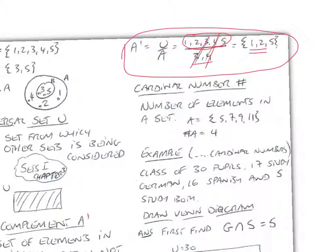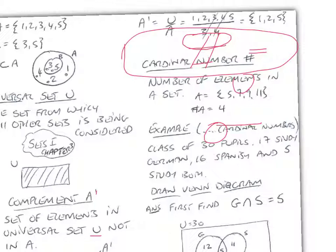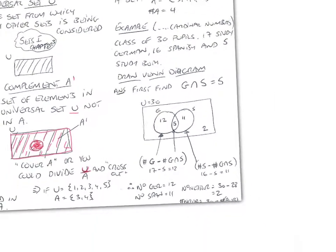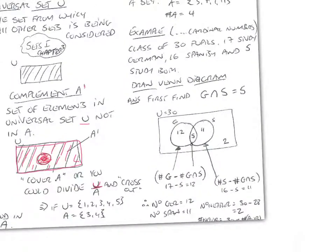Cardinal number then, this symbol here, the number of elements in the set A, so it's the number of elements in a set, basically. So if A equals this, there's 4 elements there, a cardinal number of A is 4. Now, let's look at Venn diagrams, and where we have to kind of consider the cardinal numbers. So, for example, here we have a question that says, class of 30 pupils, 17 study German, 16 study Spanish, and 5 study both. Draw the Venn diagram.